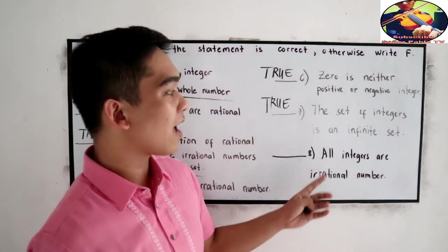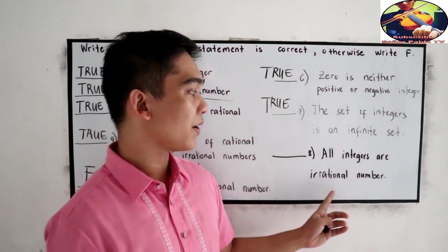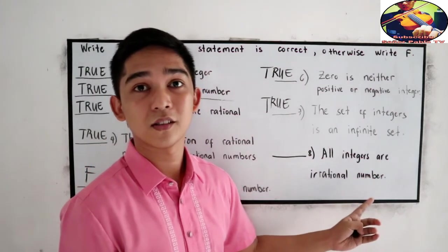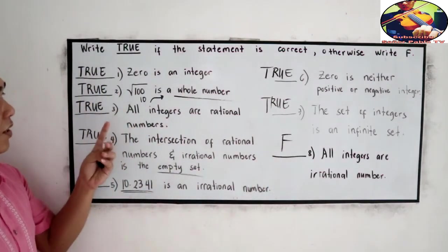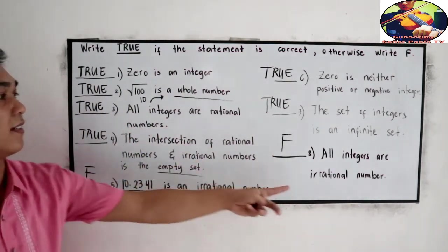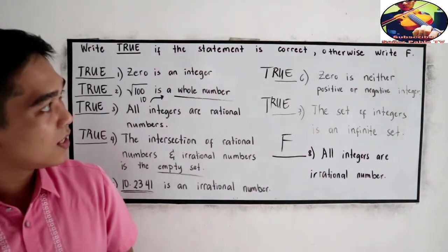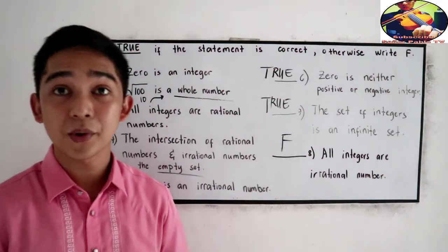And last, all integers are irrational numbers. This is F. Take a look at our number 3 and number 8. So this is the application of our real numbers.